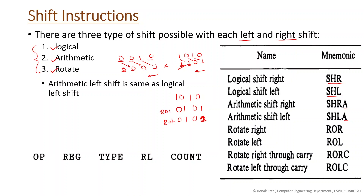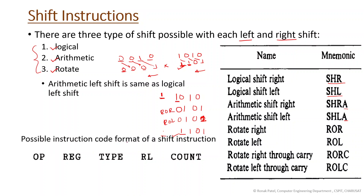Rotate through carry includes the carry bit in the rotation. Suppose carry is 1 and value is 1010. On rotate right through carry: the carry (1) moves into the most significant bit position, bits shift right, and the displaced bit goes to the carry. So carry fills the vacant position instead of the last bit wrapping around.